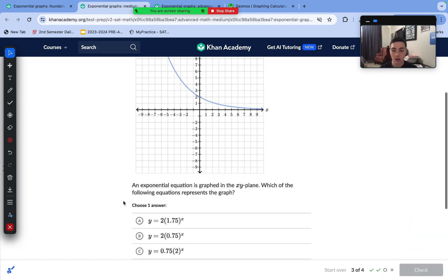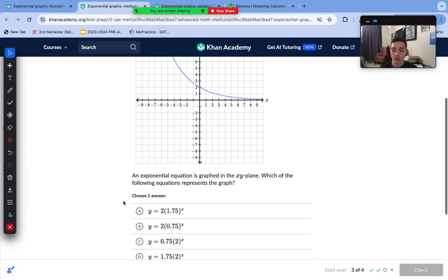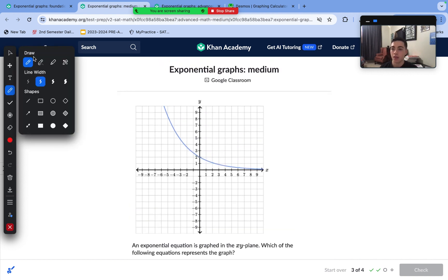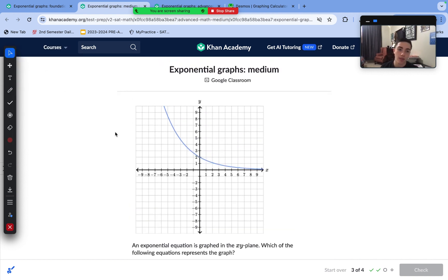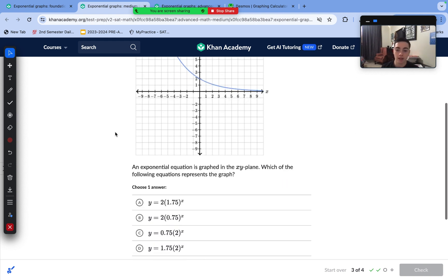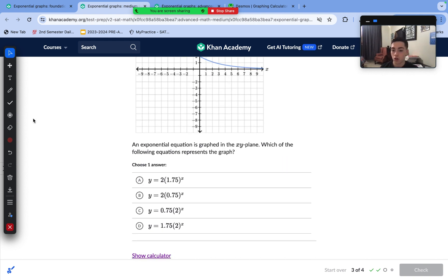Onto this question, which of the following equations represents this graph? We just need to see that this graph is decreasing. So that means B has to be less than 1, and the only answer choice where B is less than 1 is answer choice B with 0.75. The rest of these would be increasing.